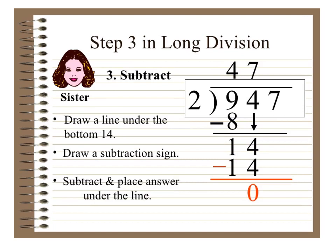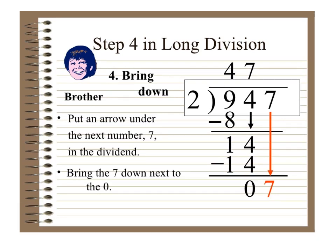Now subtract. Draw a line under the bottom 14 and write a subtraction sign. Subtract: 14 minus 14 equals 0. Place the answer under the line. Next, bring down — put an arrow under the next number 7 in the dividend and bring the 7 down next to the 0.